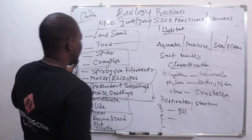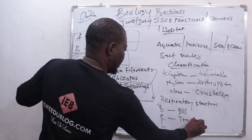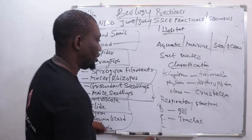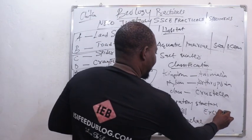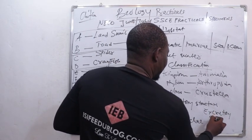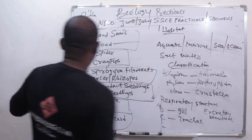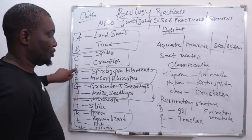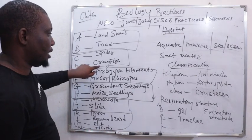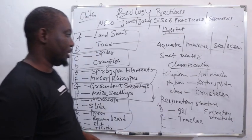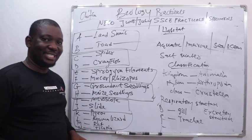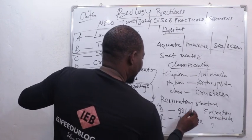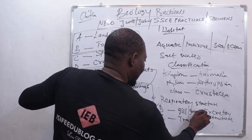For specimen C, the respiratory structure is trachea. Now, if we are asked the respiratory structure for C and D — starting with D: the respiratory structure of crawfish, which is a class of Crustacea, is green gland. For C, it is trachea.